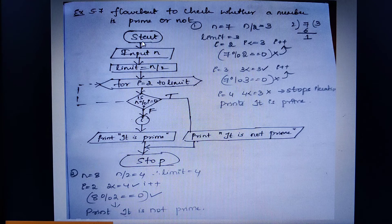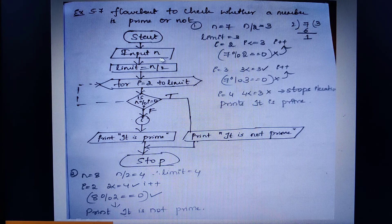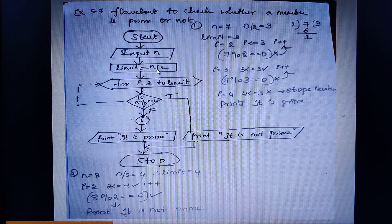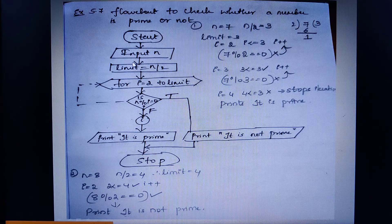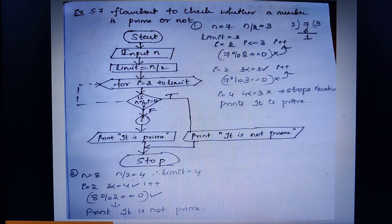Let us begin with our flowchart. The oval symbol indicates start or beginning. Next, we ask the user to input the n value, shown as a parallelogram. Then I have divided the given number as n by 2, and whatever value I get I am storing it in a variable known as limit.